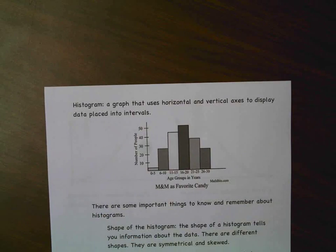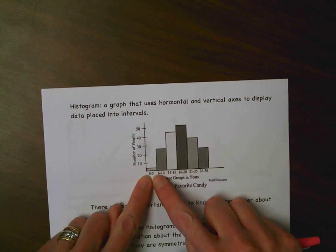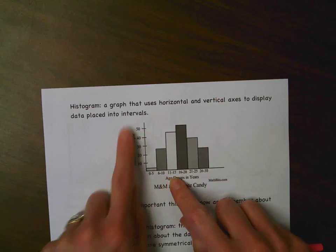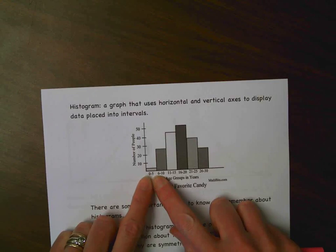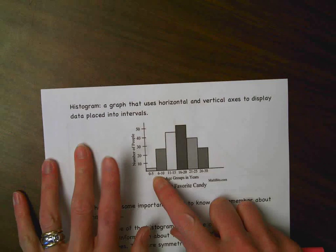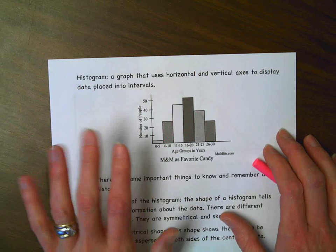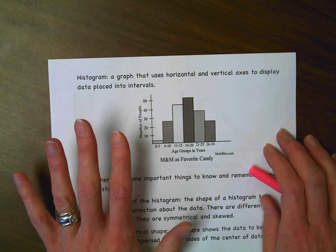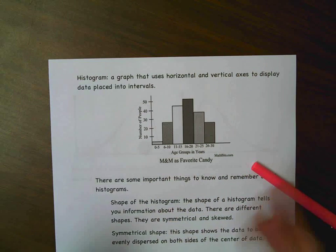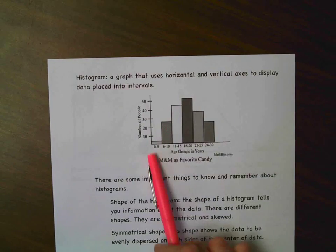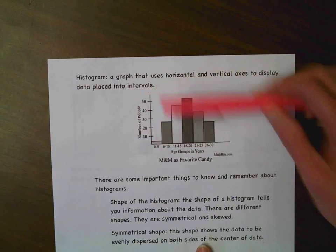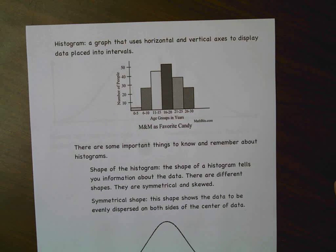The next display is a histogram — a graph that uses horizontal and vertical axes to display data placed into intervals. Intervals are sets of numerical values so that every data piece has a place to belong, and the intervals must be equally spaced, meaning the same size. For example: 0 to 5, 6 to 10, 11 to 15, 16 to 20 — each interval is evenly spaced so every value has a spot. The intervals go along the bottom, the number of people goes on the y-axis, and then you draw your chart according to your data.